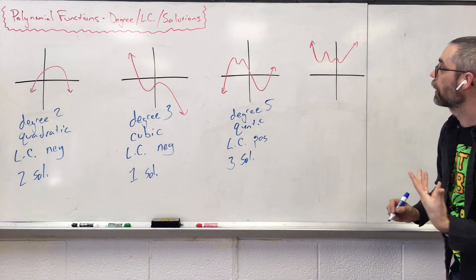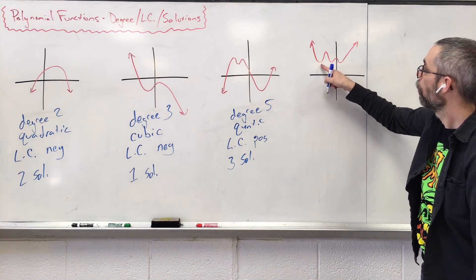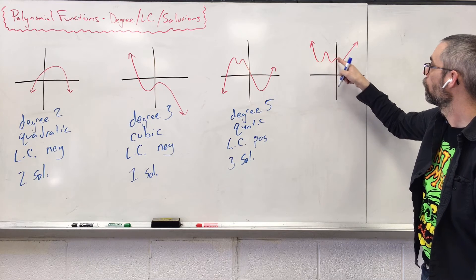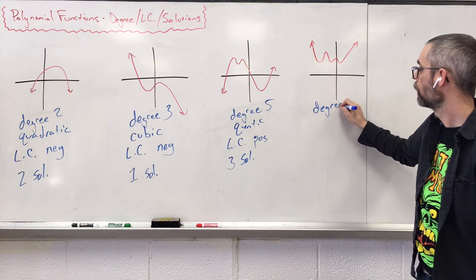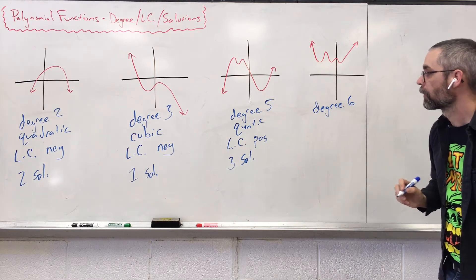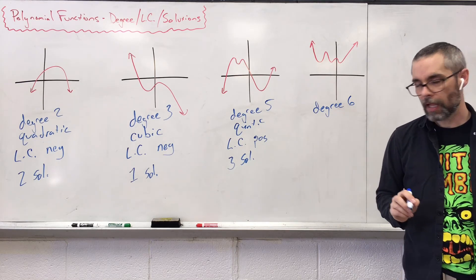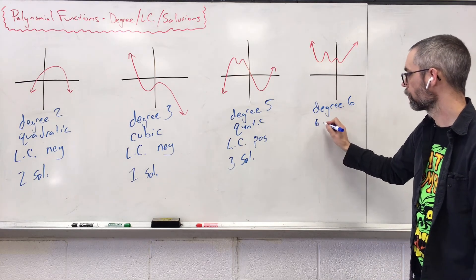And lastly, what kind of degree do we have? Well, we have one, two, three, four, five turns, meaning degree six. Do we have a special name for that? No, we don't. We just call that six-degree polynomial.